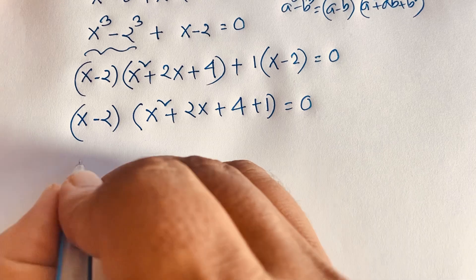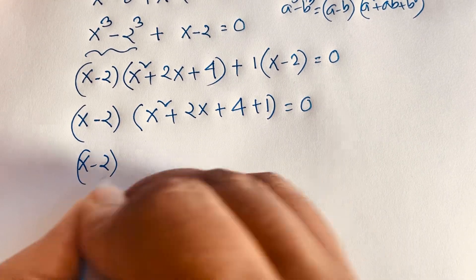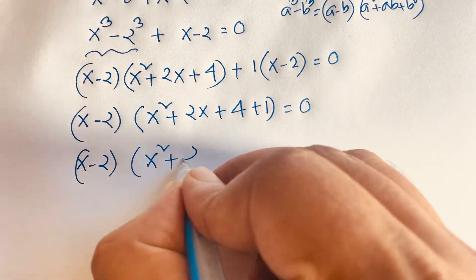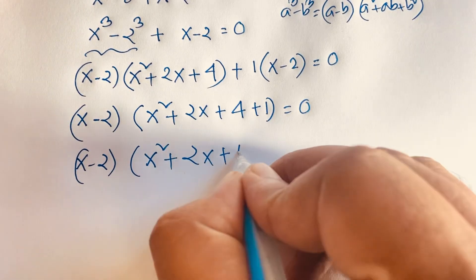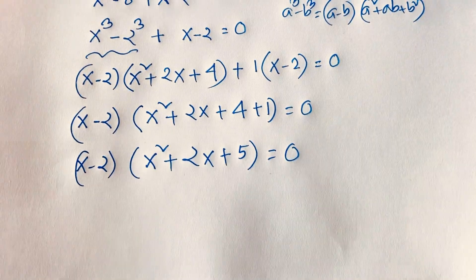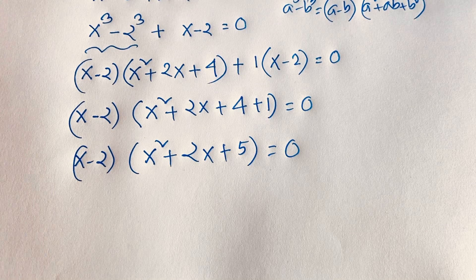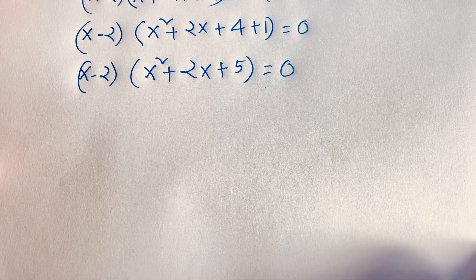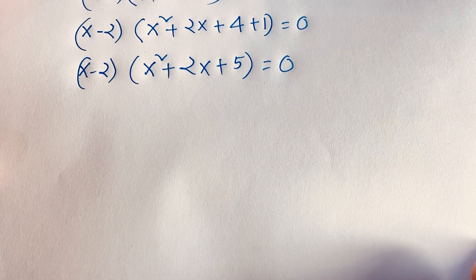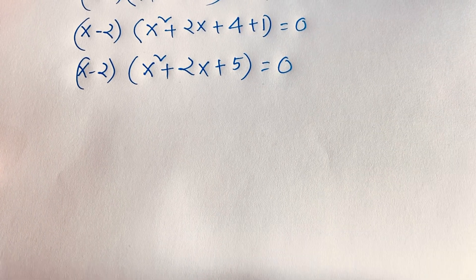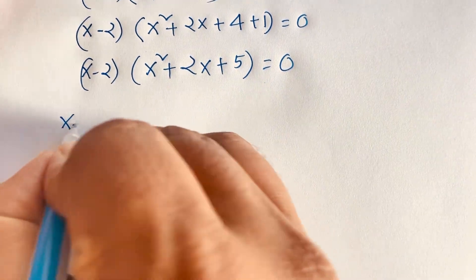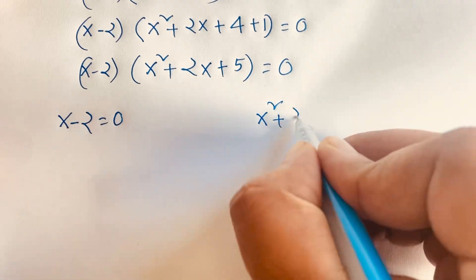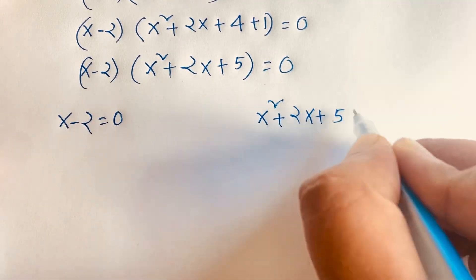Then look, it will be (x minus 2) times (x squared plus 2x plus 4 plus 1), which gives 5, is equal to 0. So we'll find out here two cases. Our first case is x minus 2 is equal to 0. The other case is x squared plus 2x plus 5 is equal to 0.